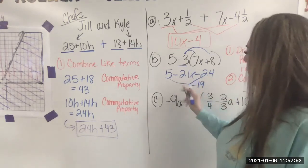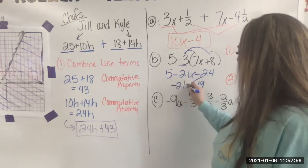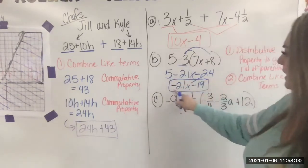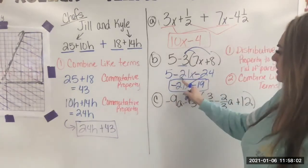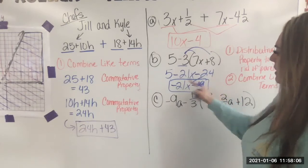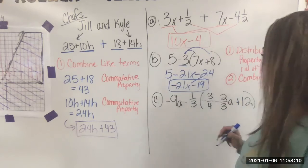And then I just bring down my negative 21 X. So my final answer is negative 21 X and then minus 19. Cause that's how much was left. The five positives took up five of the negatives.